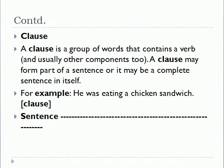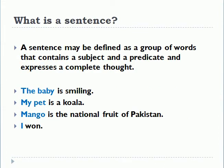In the next lecture we will see what a subject and predicate are, but today's lecture is about the types of sentences. A sentence may be defined as a group of words that contains a subject and a predicate and expresses a complete thought. For example: 'The baby is smiling' — 'the baby' is the subject, 'is smiling' is the predicate. Similarly 'mango' is a subject, 'is the national fruit of Pakistan' is the predicate.